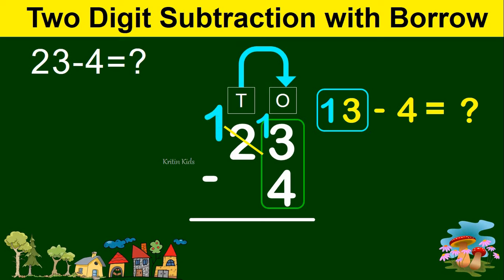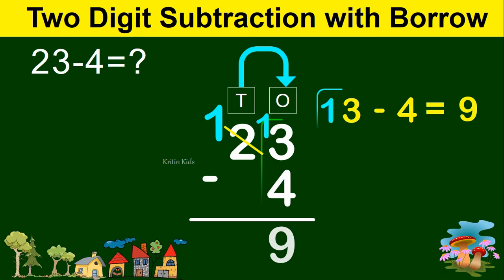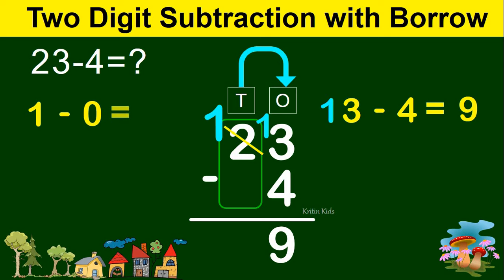Now 13 minus 4 gives us 9, so we write 9 at the ones position. Now let's go to the tens position. This 2 has become 1, and we don't have any number on the tens position for the second number, so we write it as 1 minus 0, which gives us 1. So the answer is 19. 23 minus 4 gives us 19.